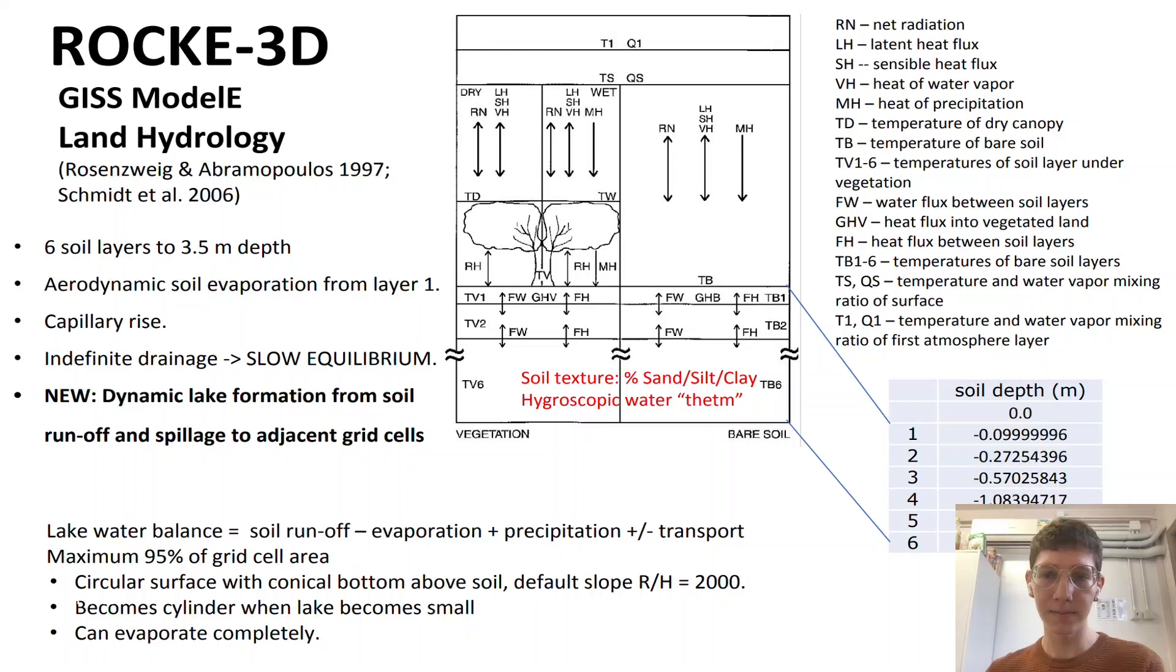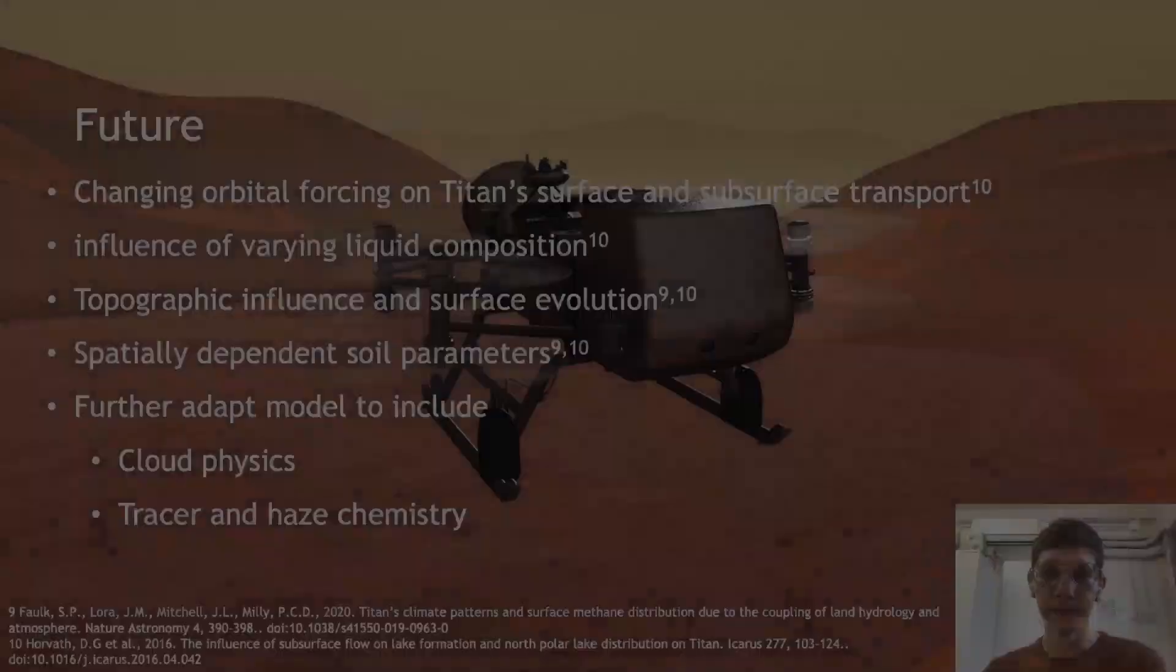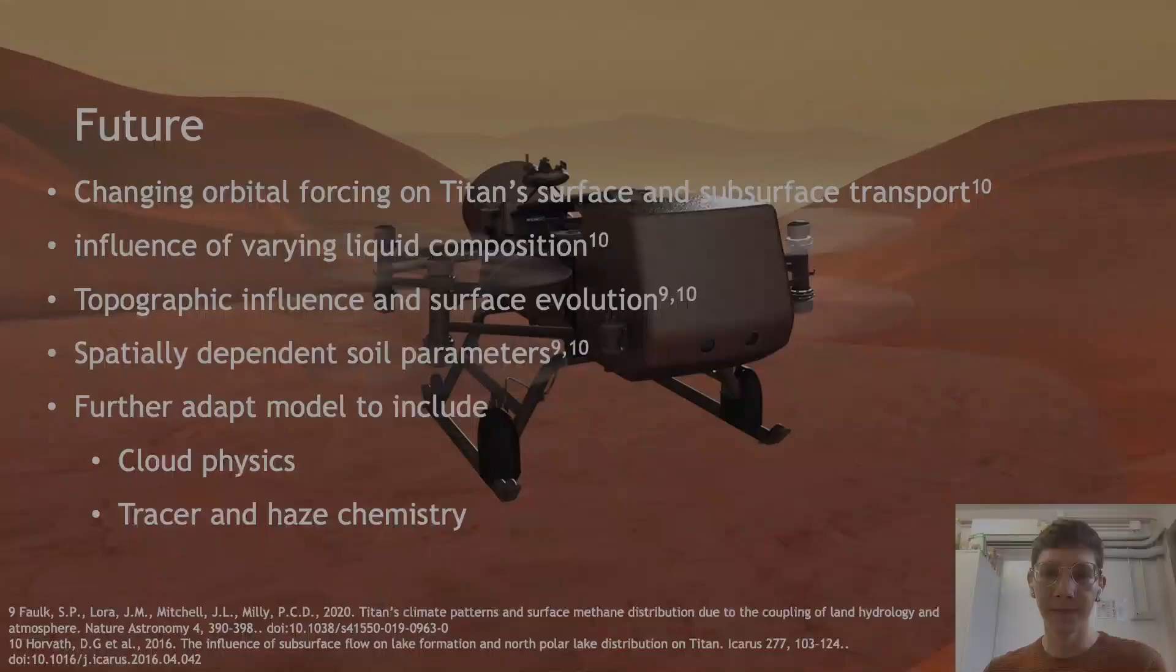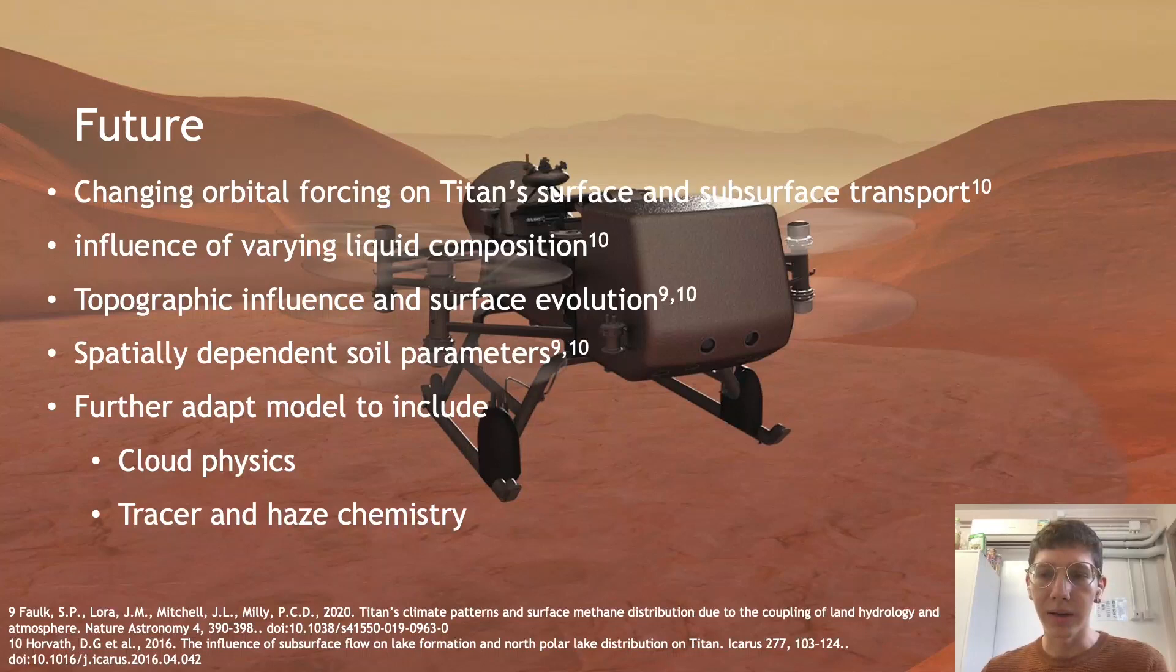So this is just a basic overview of the land hydrology in ROCKE-3D and I'm currently working to adapt this to Titan's landscape and climate through parameterization of constants such as emissivity, albedo, thermodynamics, and soil properties to accurately represent subsurface transport through aquifers or what we know about them. Future work may include modeling the influence of changing orbital forcing on the asymmetry of Titan's surface and subsurface flow, including topographic influence, spatially dependent soil parameters, and surface evolution.